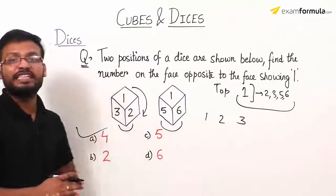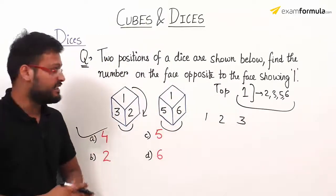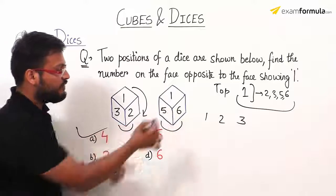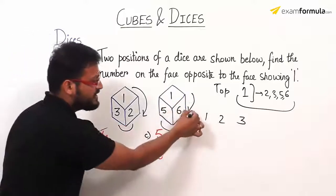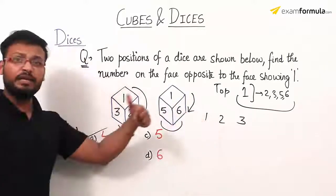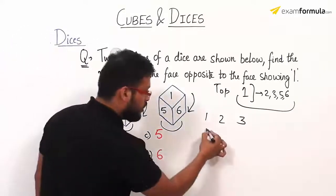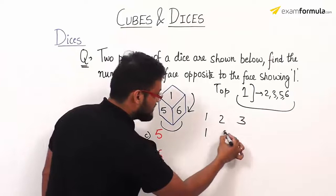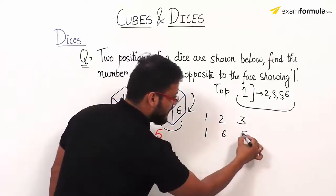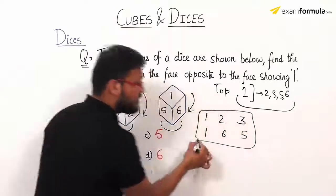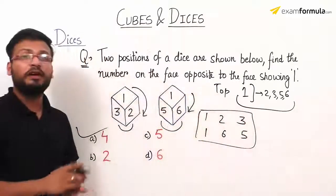The same goes for the next position of the dice. Numbers in the clockwise direction are 1, 6, and 5. So write them horizontally: 1, 6, 5. This completes the first step — the representation of the numbers from both dice positions.